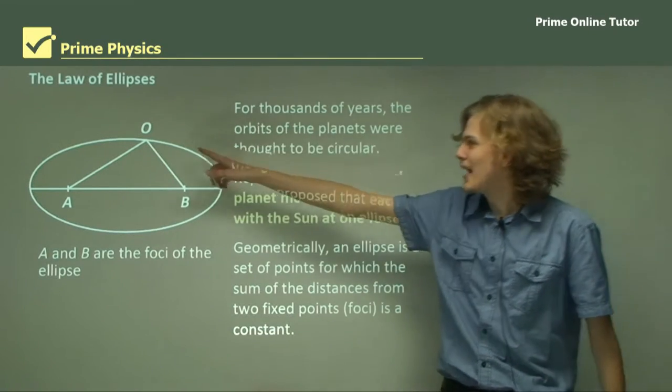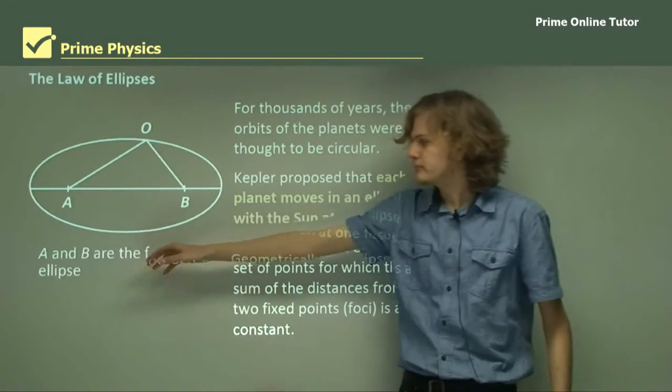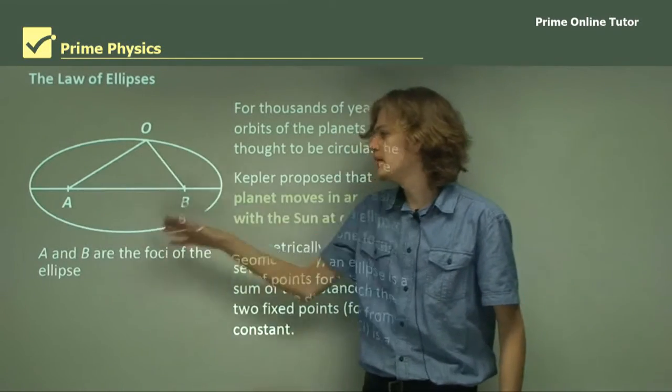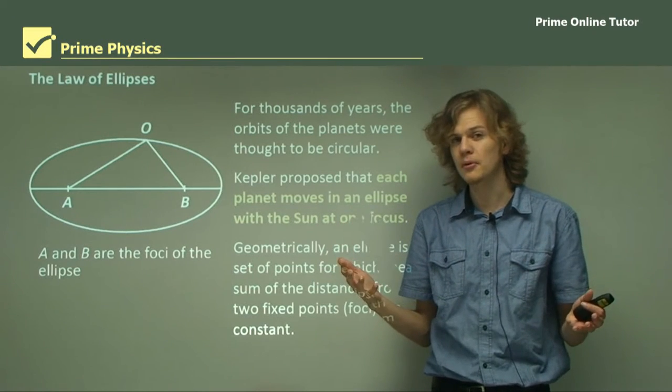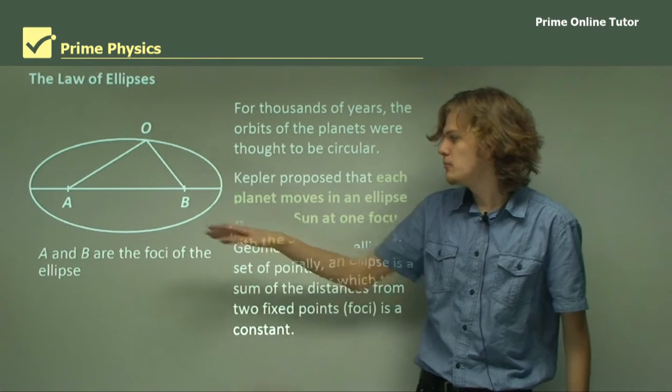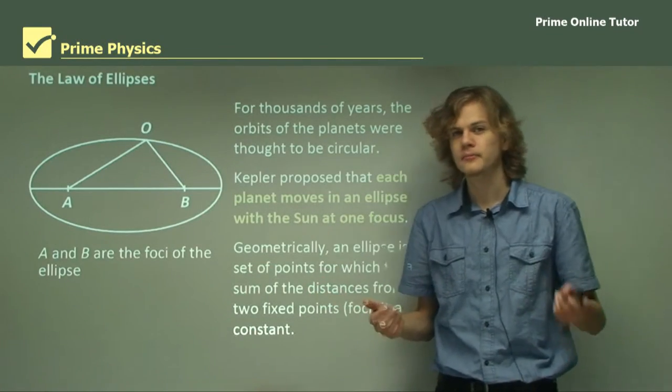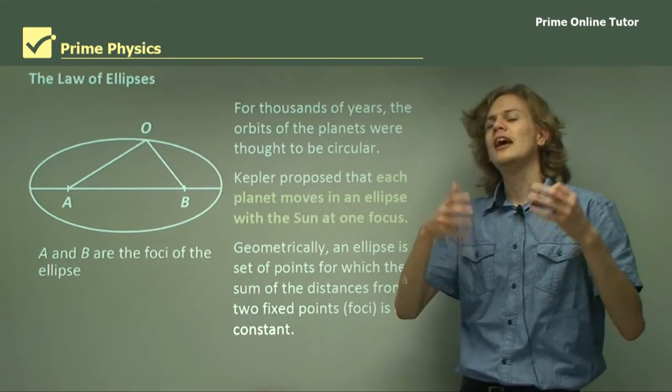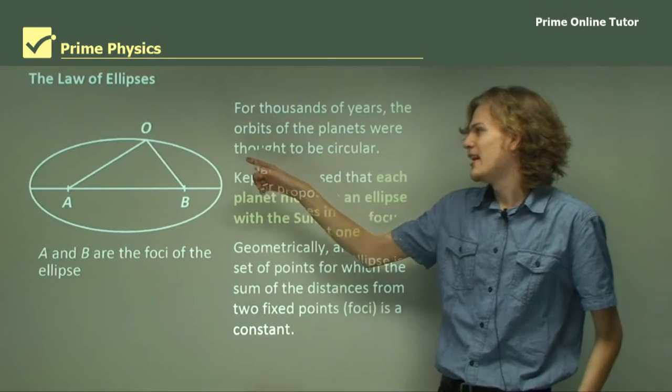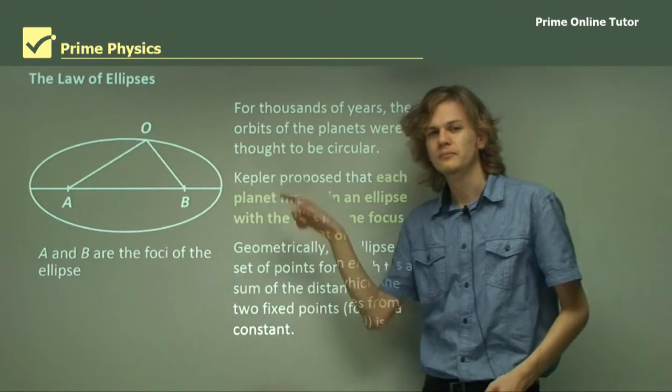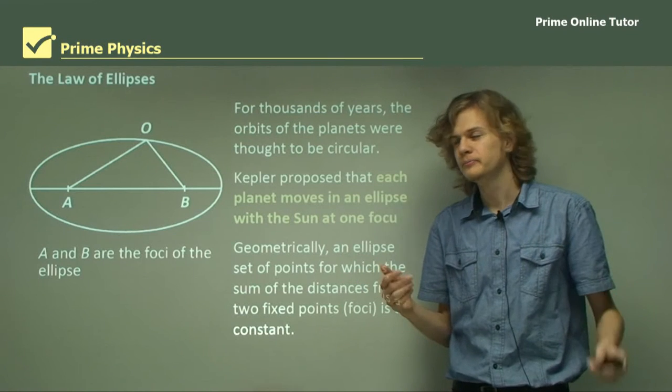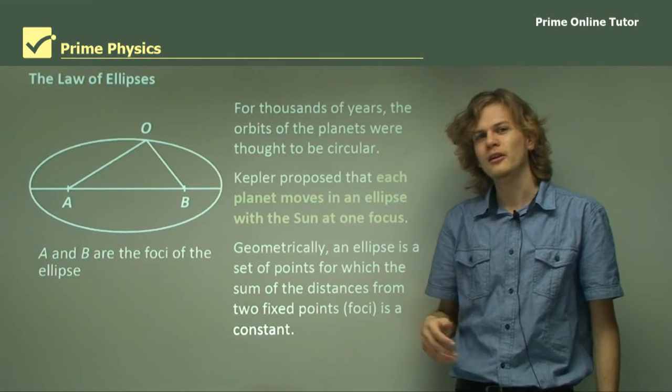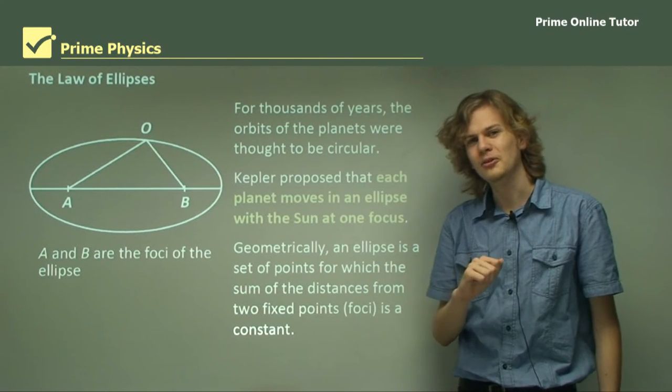That means that at any point on this ellipse here, if we drew a line to A and to B, then the distances from A to B would always add to be the same number. A and B are called the foci of the ellipse. If A and B are in exactly the same spot, that means that any point on the ellipse will be the same distance from the center and that would make it a circle.